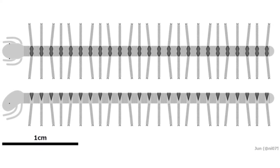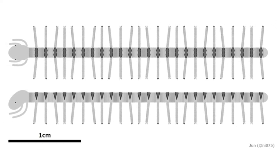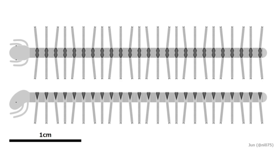An ancient worm unearthed in China has one of the oldest fossilized brains ever found. The brain's shape could also help solve a centuries-old debate about the evolution of arthropods. A 525-million-year-old fossilized worm has what is likely the oldest example of a brain ever discovered.